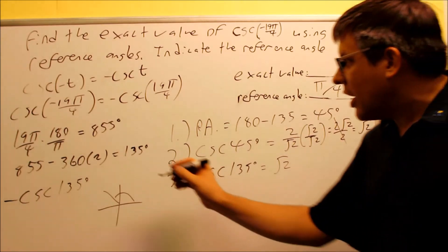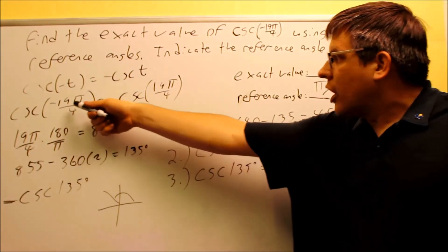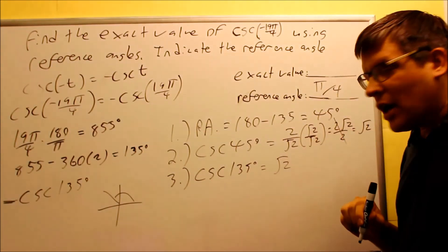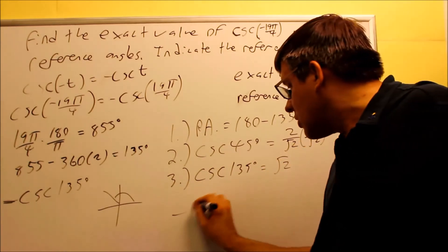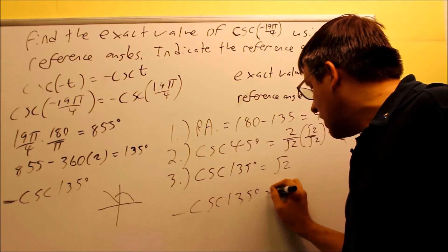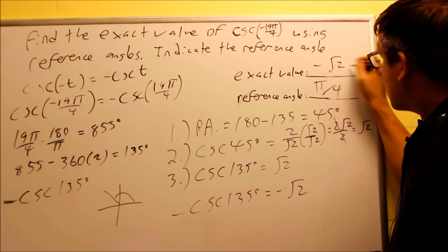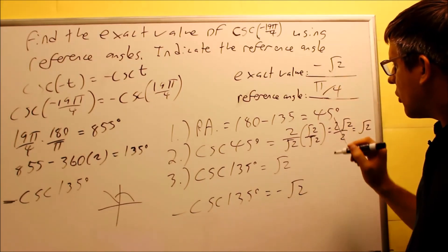However, remember that there is a negative sign right here that I had from the very beginning when I changed the negative angle into a positive angle. We wrote it as that. So because of that, I need to apply a negative sign to my answer here. So negative cosecant 135 is going to be equal to negative square root of 2. So this would be my answer right there, my exact value, negative square root of 2, and here's my reference angle, π over 4.